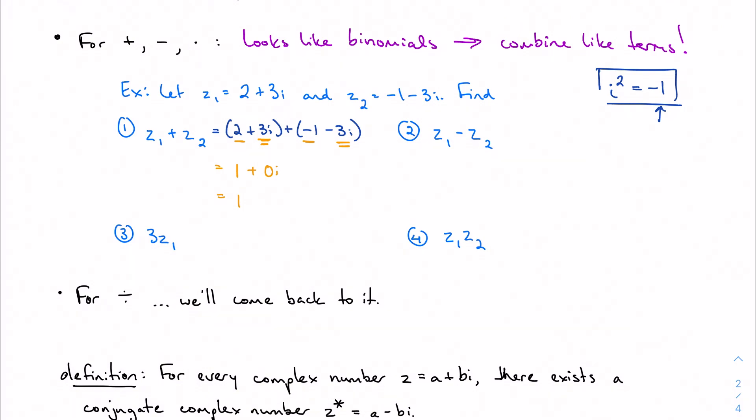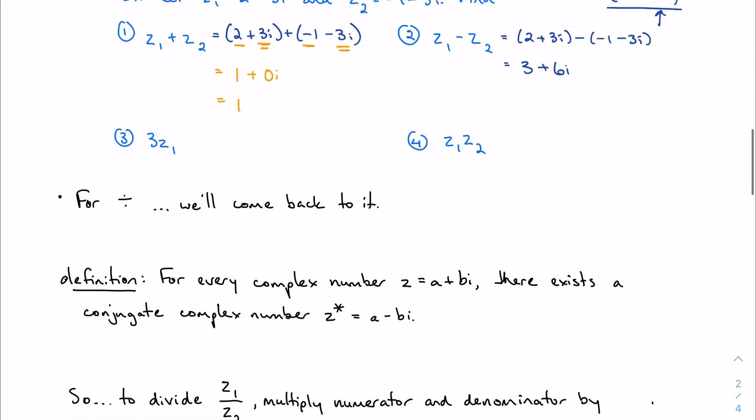For a difference, it's just the same type of thing. Remember, just like in Algebra 1 when you learned to combine like terms and add, subtract, multiply binomials, be careful with your negatives. So 2 minus negative 1 is 3, and 3 plus 3 minus negative 3 is 6, giving me 3 plus 6i.